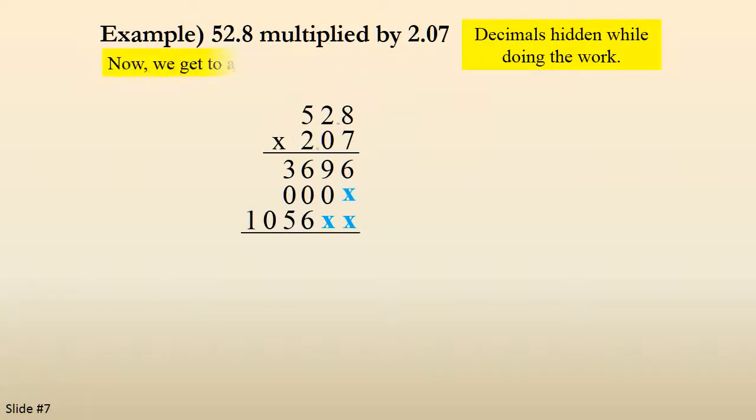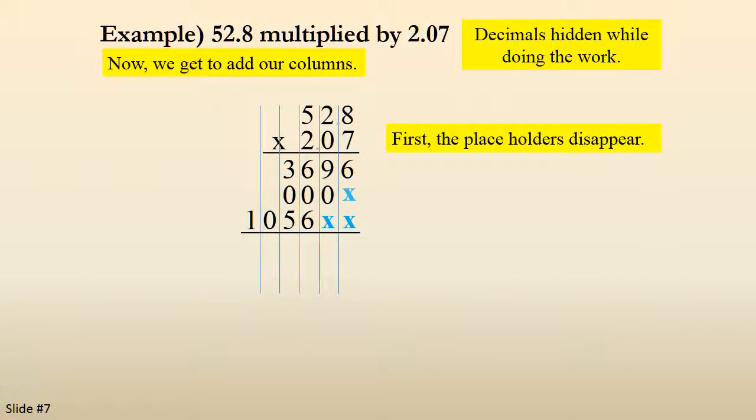And now we get to add. Sometimes it helps to line these up. People use lined paper and they turn it sideways and use the lined paper as their columns. Or if you write really neat you probably don't need to do that. But really, columns is the key. So the placeholders go away.